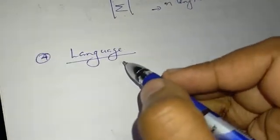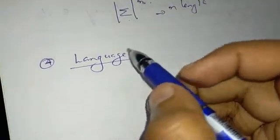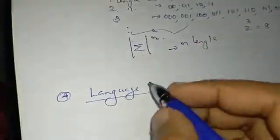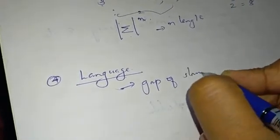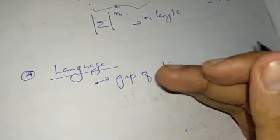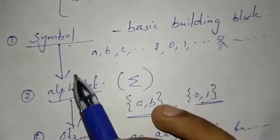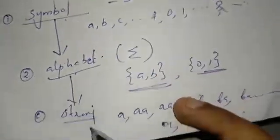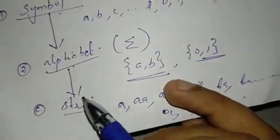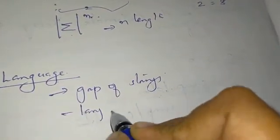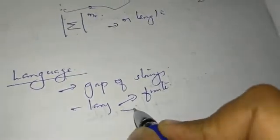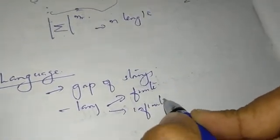Next, we will call language. If we call language, we call a group of strings — this is a language. So: symbols are the basic building block; alphabet is a group of symbols; string is a group of alphabets; language is a group of strings. Now, we call 2-length finite language, and infinite language. Finite language and infinite language.